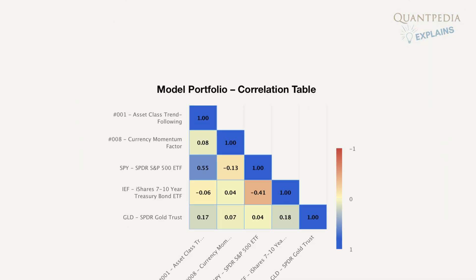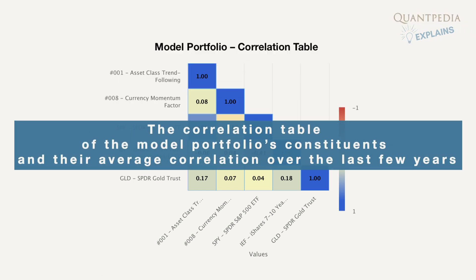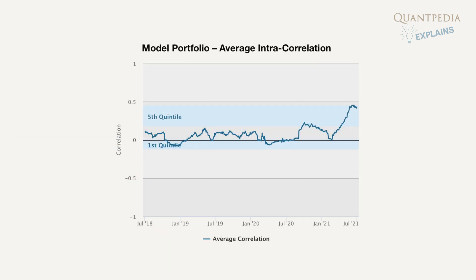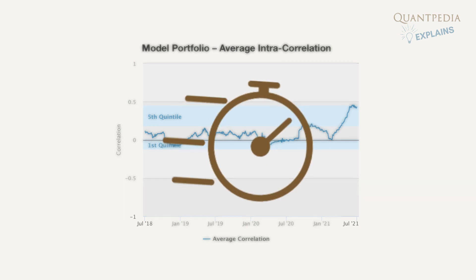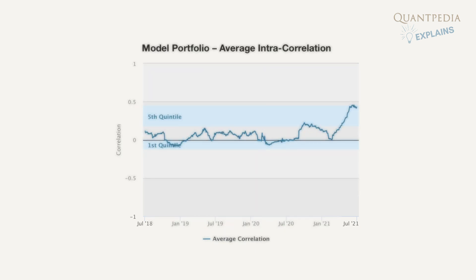Additionally, the correlation analysis offers the possibility to review the correlation table of the model portfolio's constituents plus their average correlation over the last few years. This provides the opportunity to quickly find out which segments of the model portfolio temporarily move in unison or, on the other hand, have divergent movements.